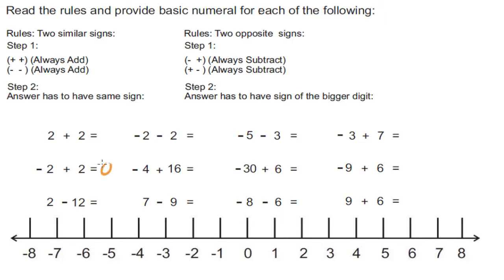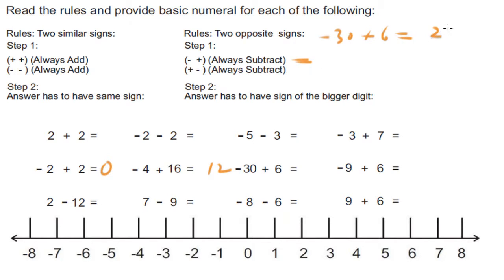Negative two plus two is zero. Negative four plus sixteen: two opposite signs, we subtract. Sixteen minus four is twelve, and we carry the positive sign because sixteen is the bigger number, so this is positive twelve. Negative thirty plus six: two opposite signs, we subtract. Thirty minus six is twenty-four, and thirty is the bigger digit, so this is negative twenty-four.